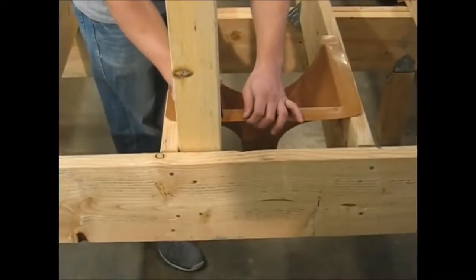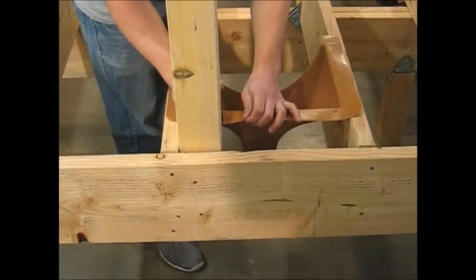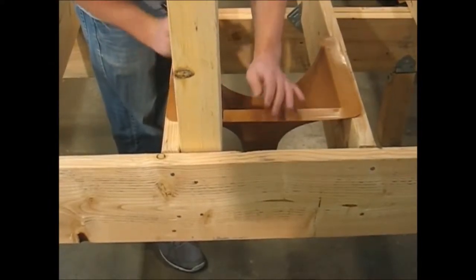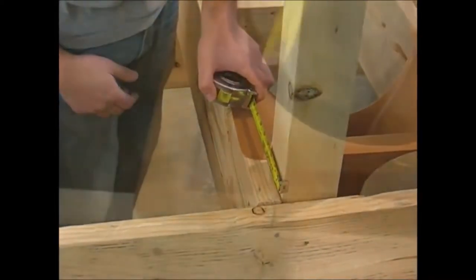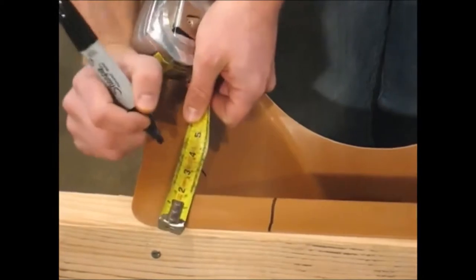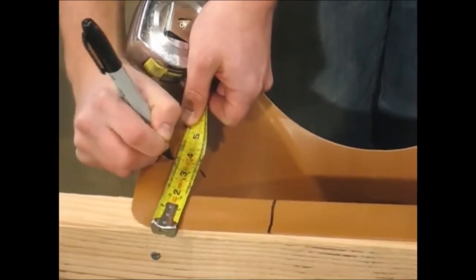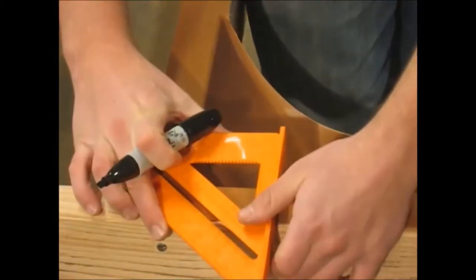Then you'll slide your downspout up against the 4x4 post, making a mark where you're going to cut out part of the funnel. Then you'll measure how large the obstruction is, so that you know how much of the funnel you'll need to cut out to receive the obstruction.